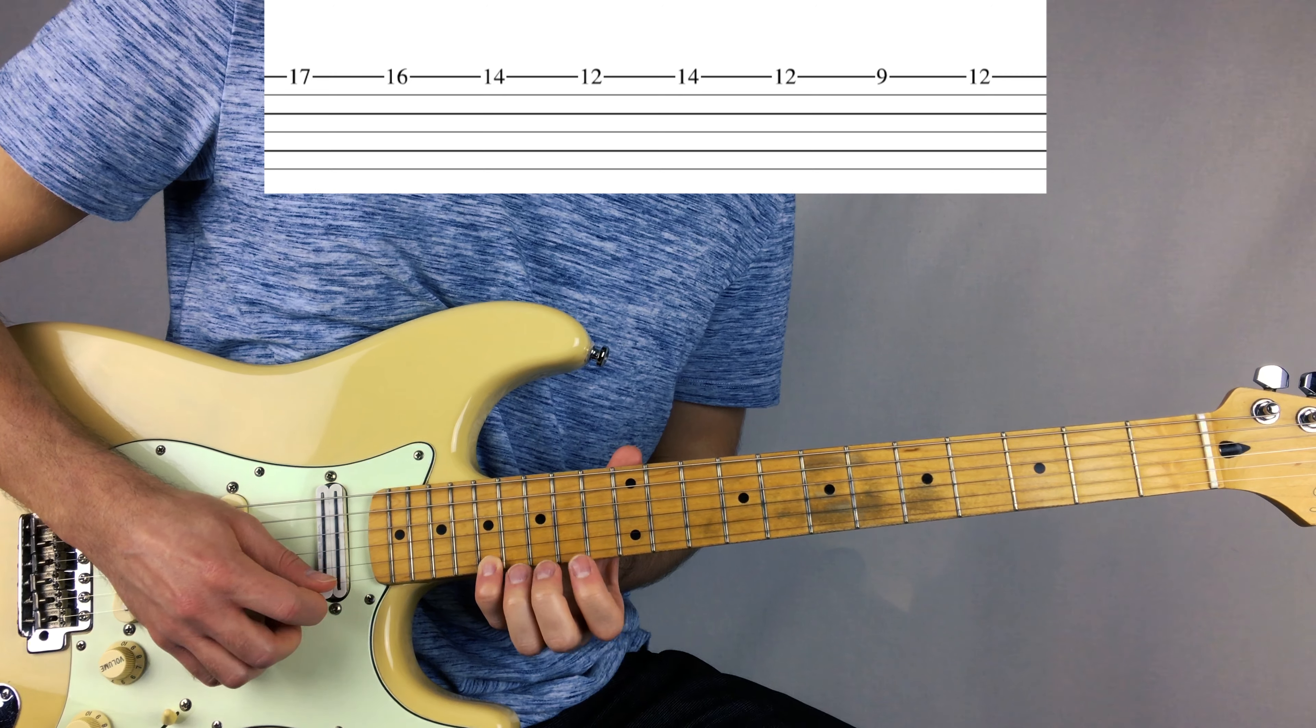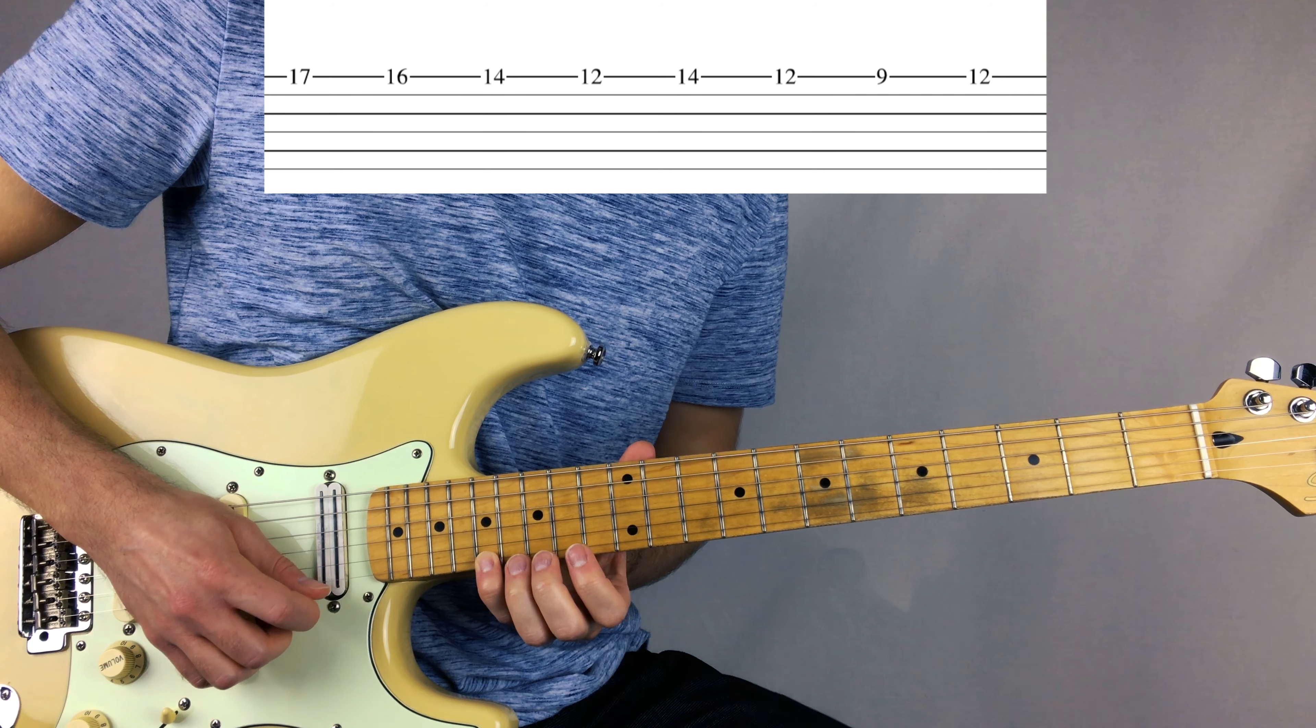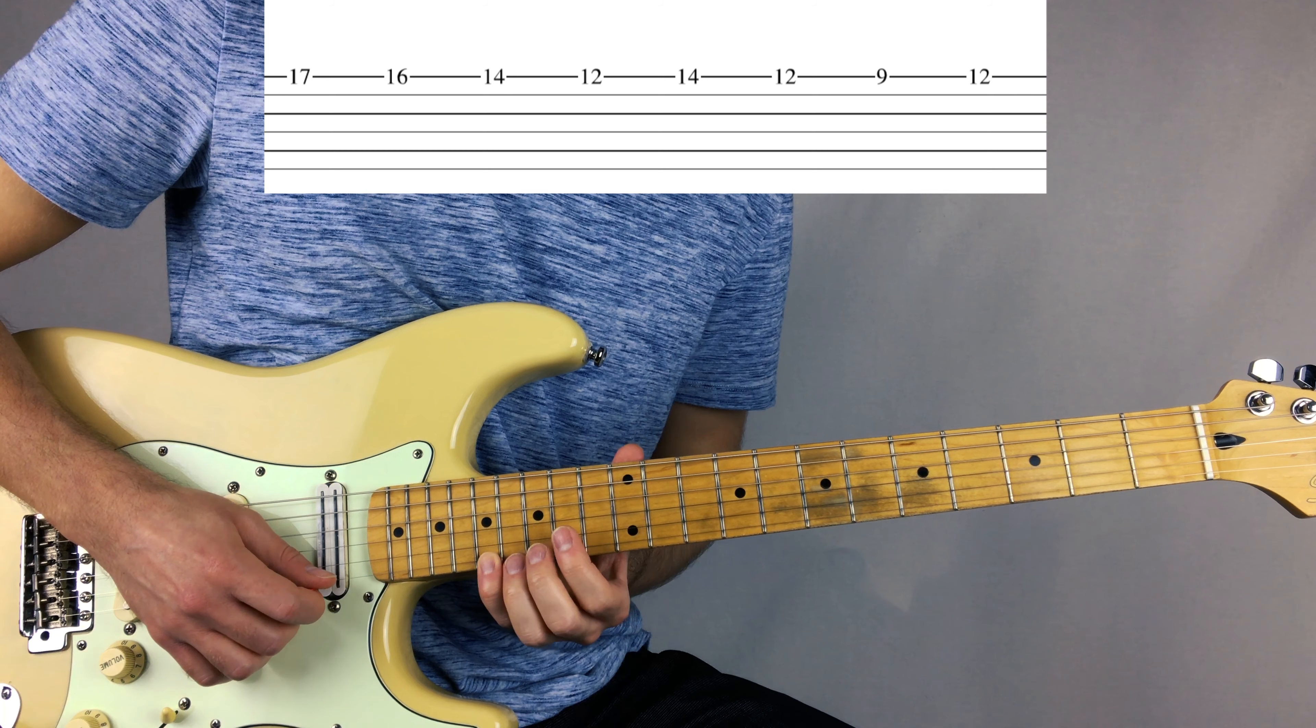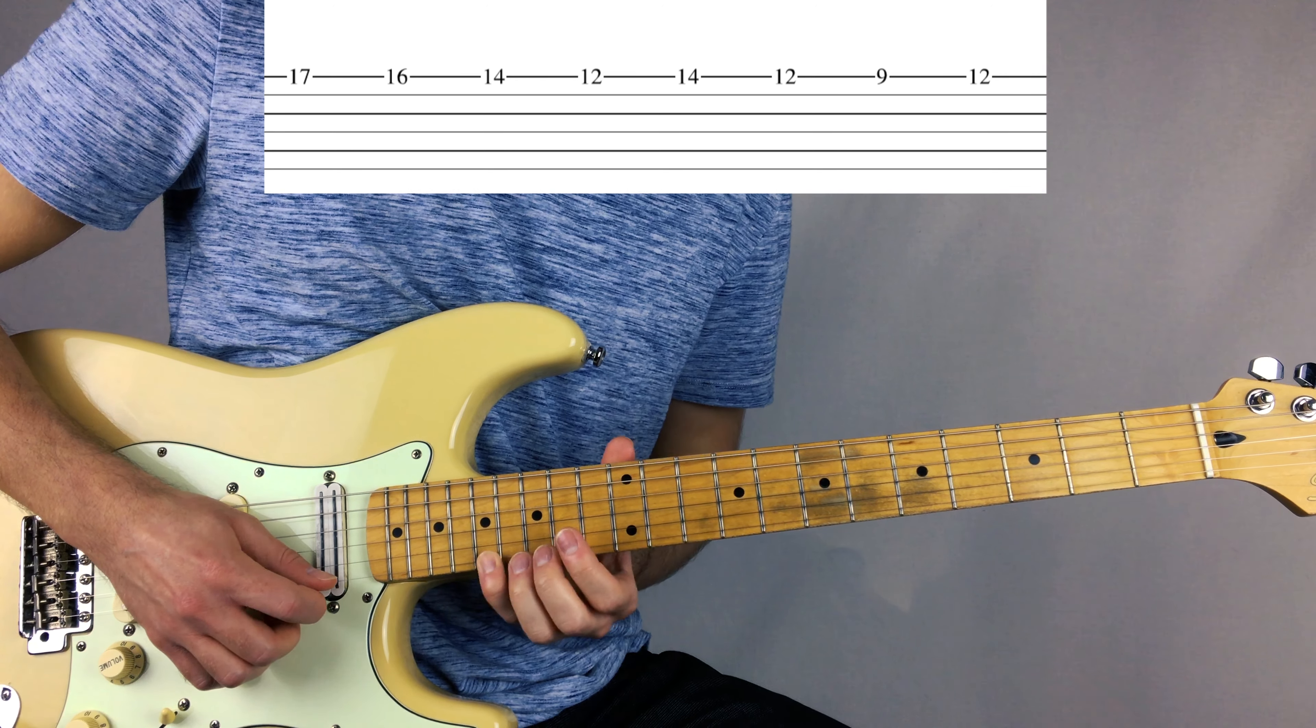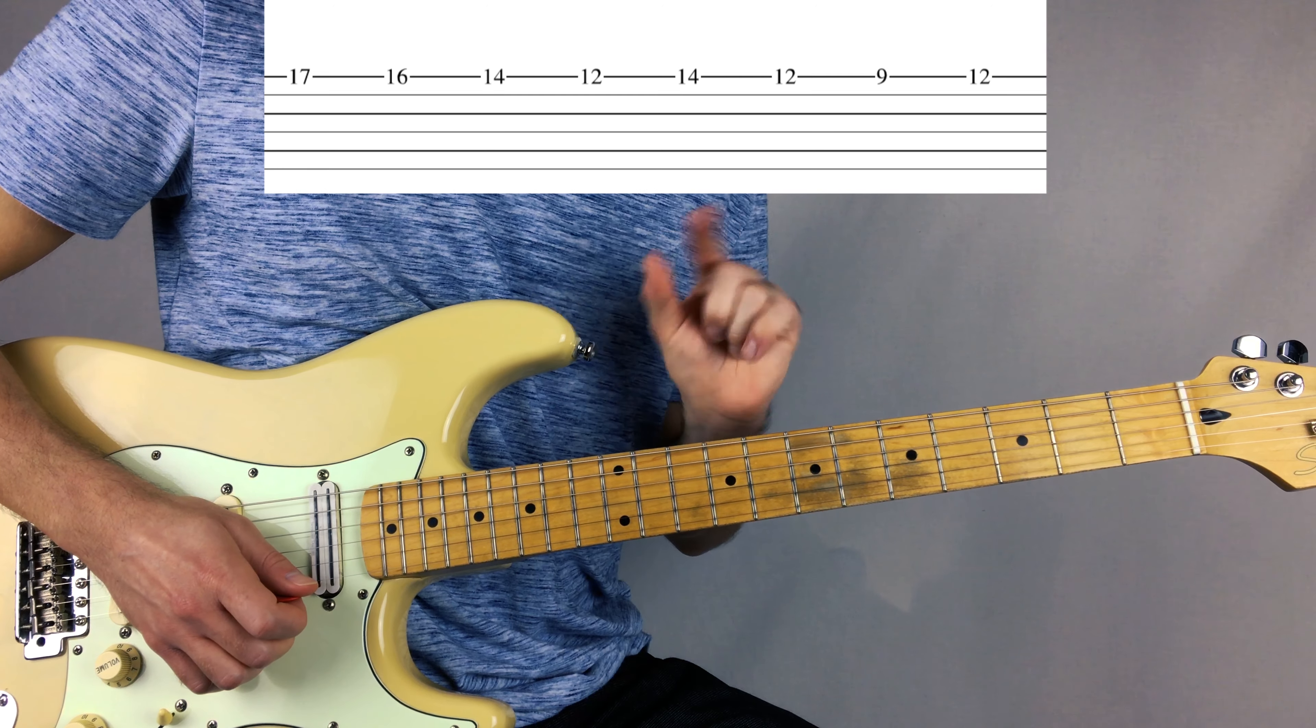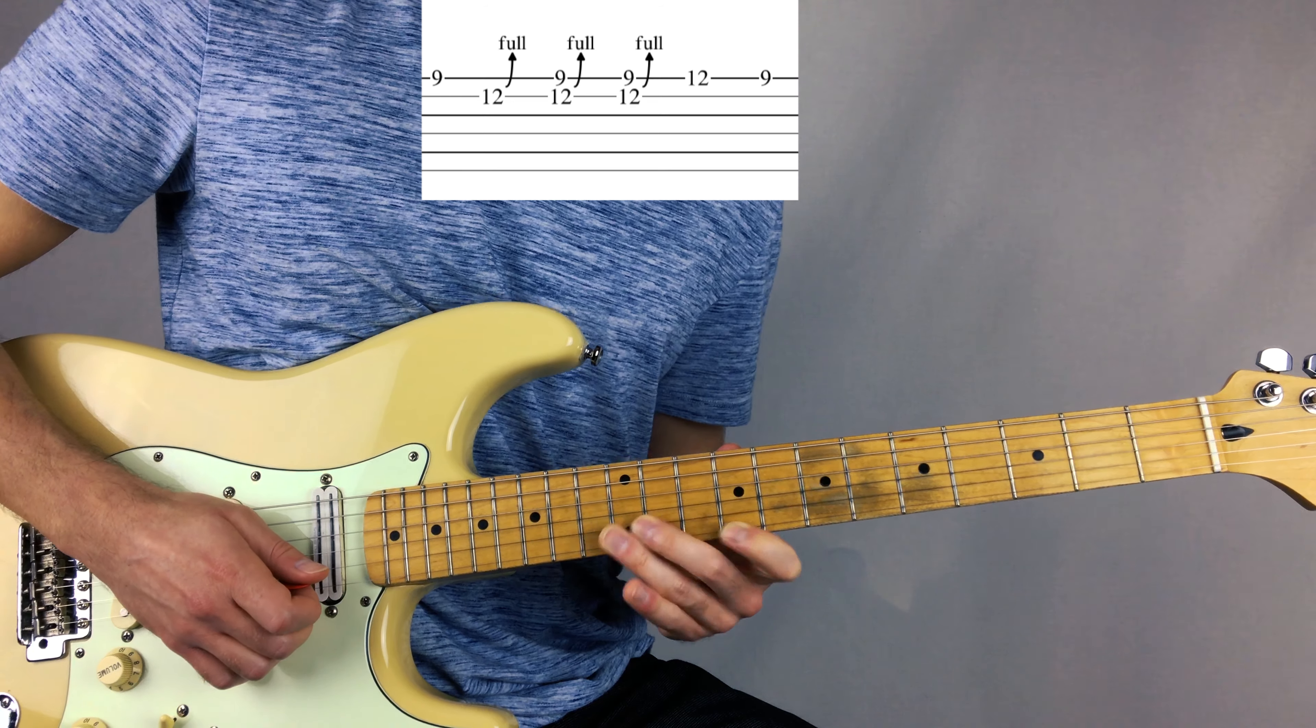So, here goes. Cool. Alright, then the next phrase right after that. Here's a little scream here, where you're hitting the 9 and then you're bending on the 12 at the same time. So watch this.